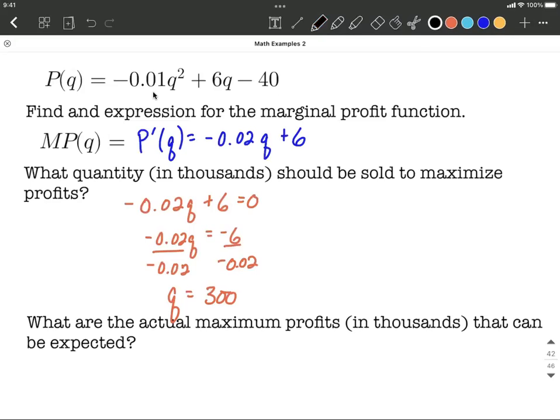Parabolas that open downward have this sort of look going on. And we're going to be finding that maximum value is the only thing they can really have. They can't really have a minimum to go along with that maximum.